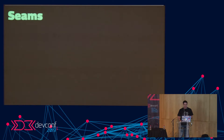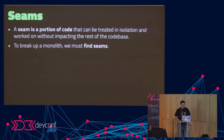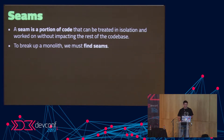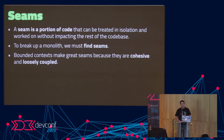With bounded contexts, the next thing is to look at seams — a seam is a portion of code that can be treated in isolation and worked on without impacting the rest of the code base. To break up a monolith, it's very important that you find seams in your application layer. Bounded contexts, once you define them, make it very obvious to see seams, because by definition bounded contexts are cohesive and loosely coupled.